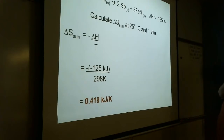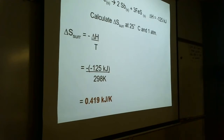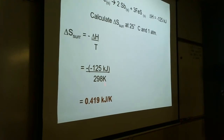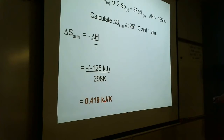Let's do an example: given a reaction and its delta H, find the entropy change of the surroundings at 25 degrees Celsius. Pressure is not relevant here. Temperature must be in Kelvin. Delta S of surroundings equals negative delta H divided by T — negative over negative gives positive. Don't forget to convert Celsius to Kelvin. Units would be kilojoules per Kelvin. Calculating delta S of the surroundings is a relatively easy calculation.